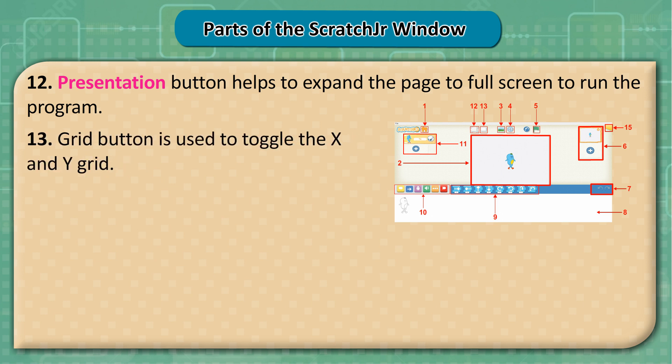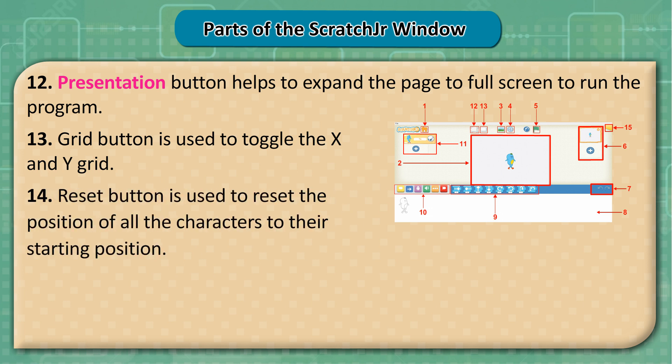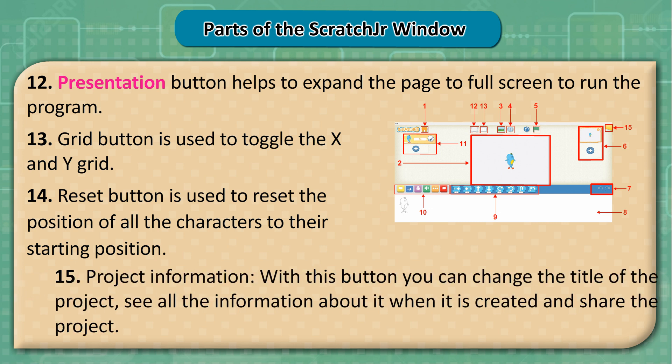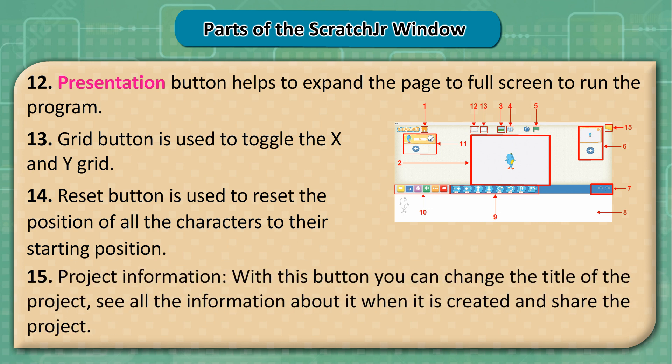12. The Presentation button helps to expand the page to full screen to run the program. 13. The Grid button is used to toggle the X and Y grid. 14. The Reset button is used to reset the position of all characters to their starting position. 15. Project information: With this button you can change the title of the project, see all the information about when it was created, and share the project.